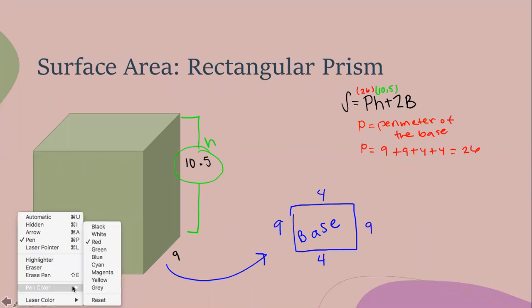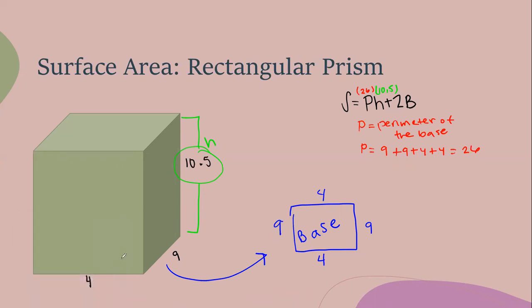And then capital B stands for area of the base. Because my base is a rectangle, I look on my formula chart if I forget how to find the area, but Emily already told us it's the length times width. So 9 times 4, which is 36.